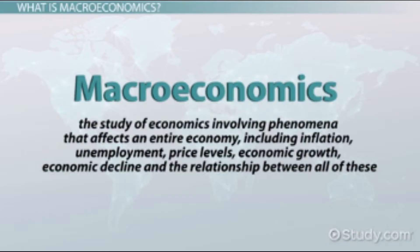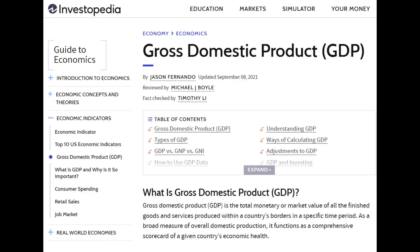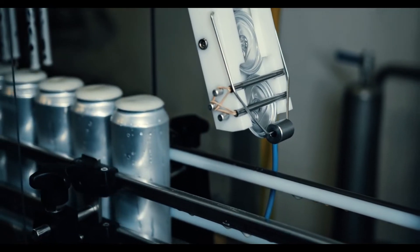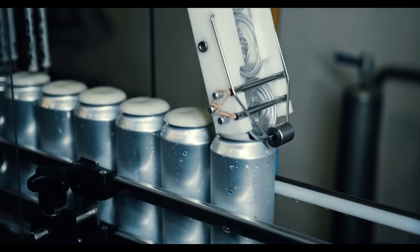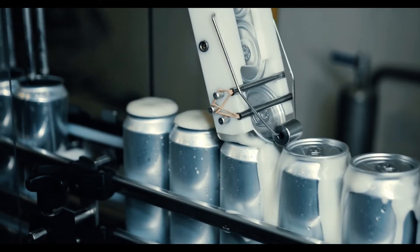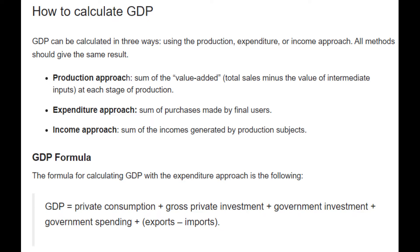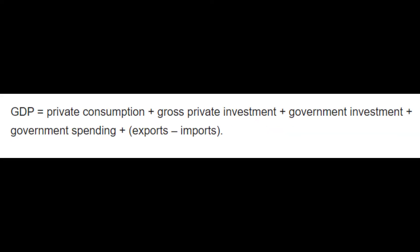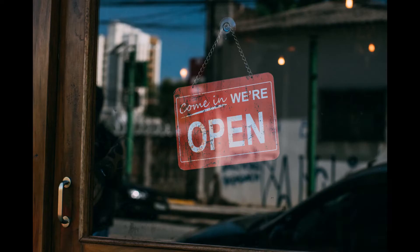Macroeconomics is the study of the economy at large. Most governments around the world usually base their economic decisions on maximising a number called gross domestic product, or GDP. GDP is meant to represent the total market value of the goods and services produced by a country's economy during a period. There are a number of ways of calculating GDP; however, one common way is the expenditure approach, which defines GDP as the sum of households, businesses, and the government.